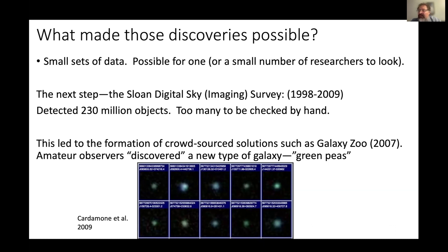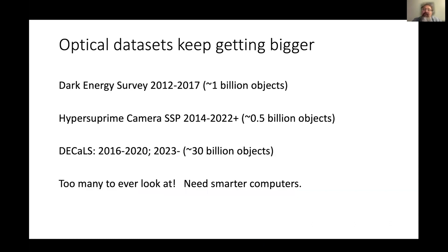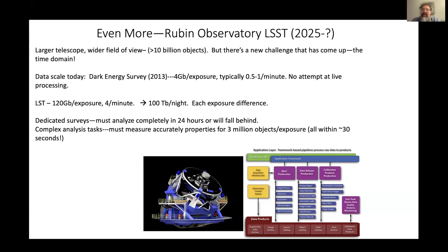200 million objects is just on the edge of what you can get a thousand people to look at over the course of a year. But optical datasets keep getting bigger: the Dark Energy Survey ran from 2012 to 2017 and got five times more objects; the SSP is three times more; the DECaLS survey has about 30 billion objects — too many to ever look at. That means you've transitioned from human intelligence to artificial intelligence.